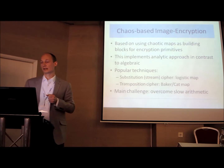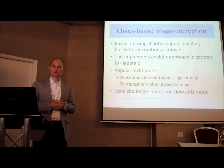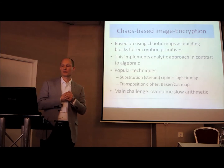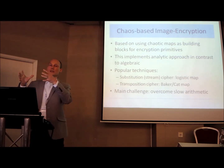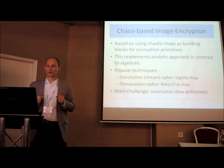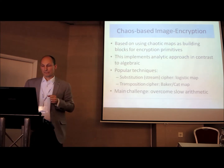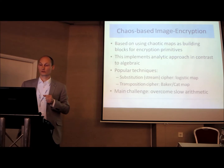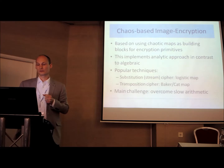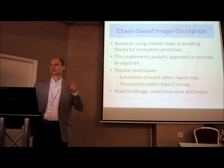What we're looking at now is symmetric encryption. In symmetric encryption, you can basically do two main things: you could either substitute your input plaintext with something else, or you could rearrange the order. So we have substitution and transposition ciphers as the main building blocks. People have identified suitable chaotic maps to do this — for the substitution cipher we use the logistic map, and for the transposition cipher we use a two-dimensional Baker map.